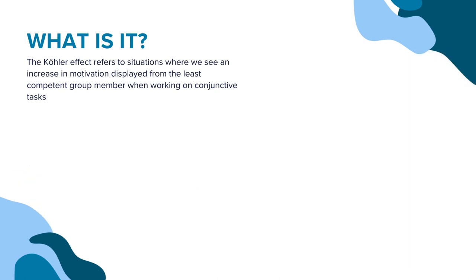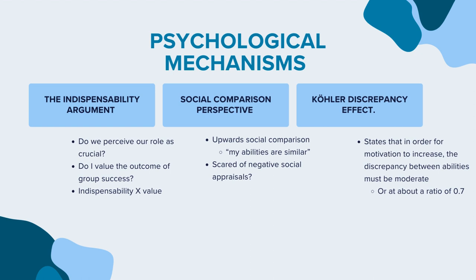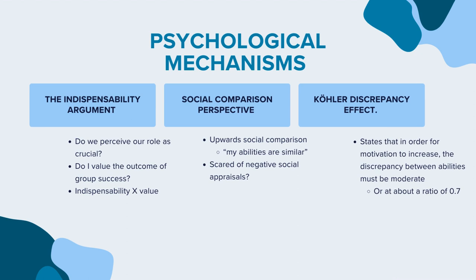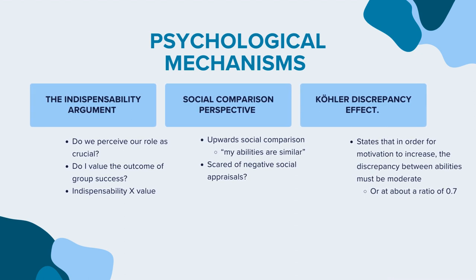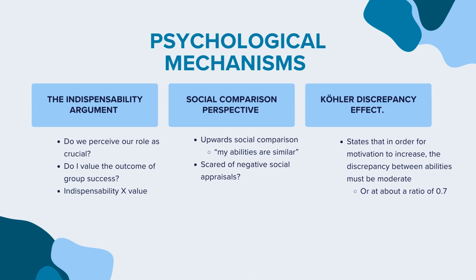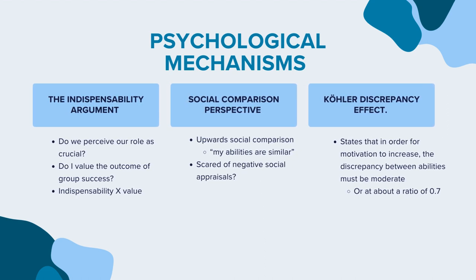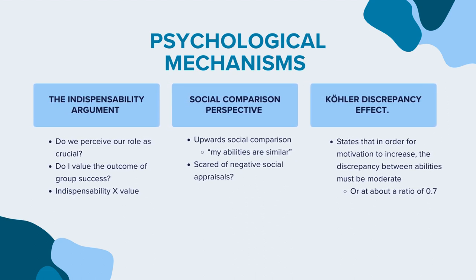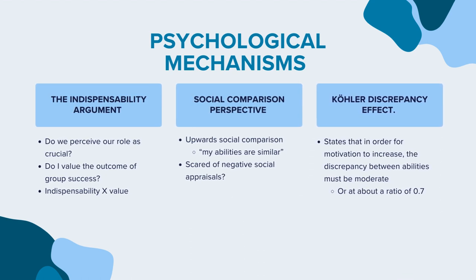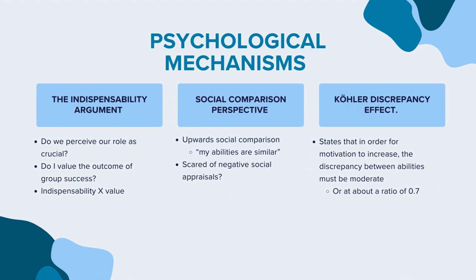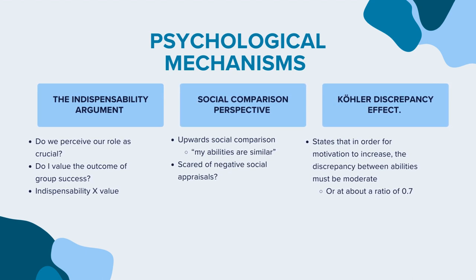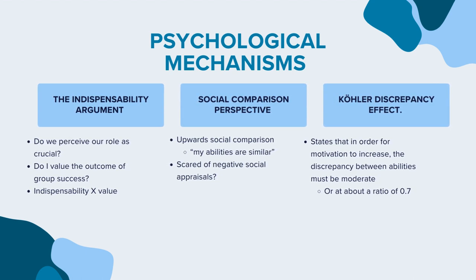One argument to explain this interaction is called the indispensability argument. This argument states that the more we perceive our role as crucial to group success, the more effort we exert. Now if we want to see an increase in motivation, the outcome of group success also needs to be valued by the weaker team member. So referring to our two mountaineers, the weaker mountaineer will be aware that their role is crucial in reaching the summit. Reaching the summit is a goal which is highly valued, therefore producing an increase in motivation.